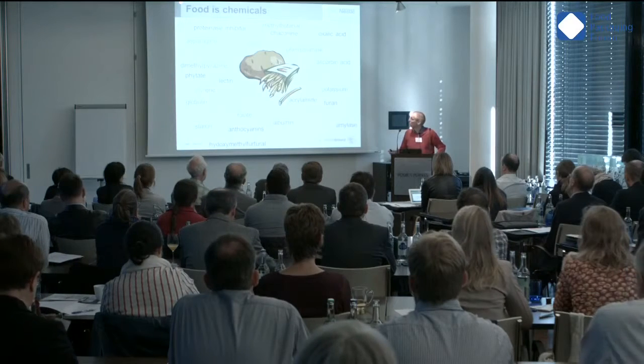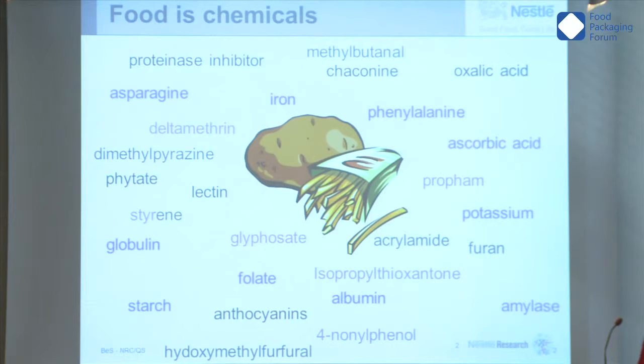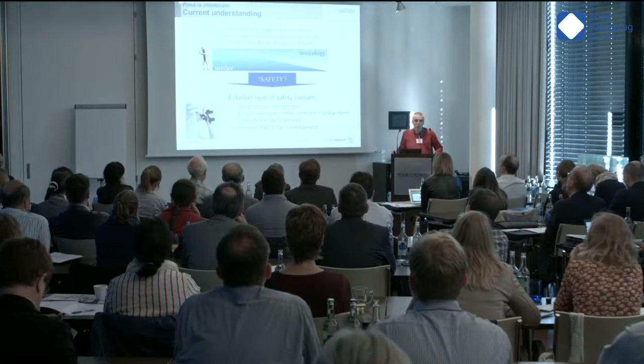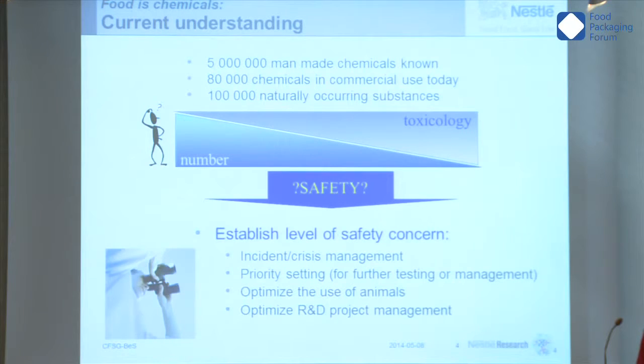If you have asparagine, which is an amino acid, and glucose, and you heat up, you get acrylamide, which is a genotoxic carcinogen. Then you have many others — what I would say are indirect additives, residues from agricultural practices, chemicals migrating from the packaging, environmental contaminants, some naturally occurring, some pollutants. What I wanted to summarize with this potato story is that food is a mixture of chemicals, and we need to keep that in mind.